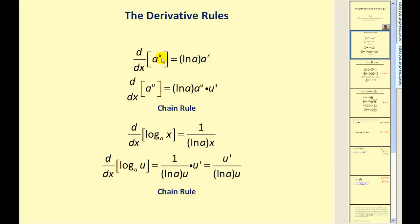The derivative of the function a to the power of x is equal to natural log a times a to the x. If we have a composite function, we'll have a to the u times u prime instead of just a to the x. The derivative of the function log base a of x is equal to one over natural log a times x. If we have the function log base a of u, applying the chain rule, we would have one over the product of natural log a and u times u prime, and the u prime would end up in the numerator.